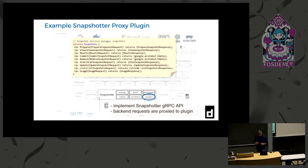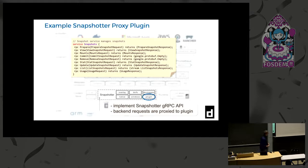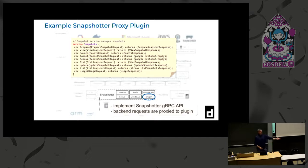We just voted to accept the stargz remote snapshotter as a sub-project in containerd, so it'll be moving into the containerd organization. That's one implementation of a snapshotter plugin - you can run the stargz snapshotter or CERN's CvmFS snapshotter and configure containerd to use them without needing to get PRs into containerd itself.